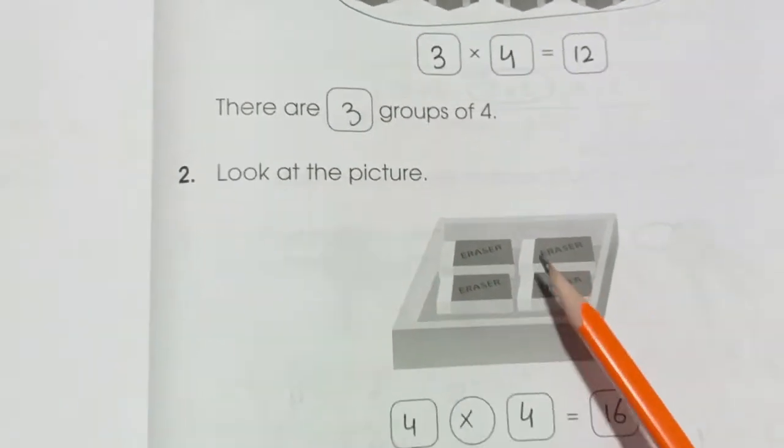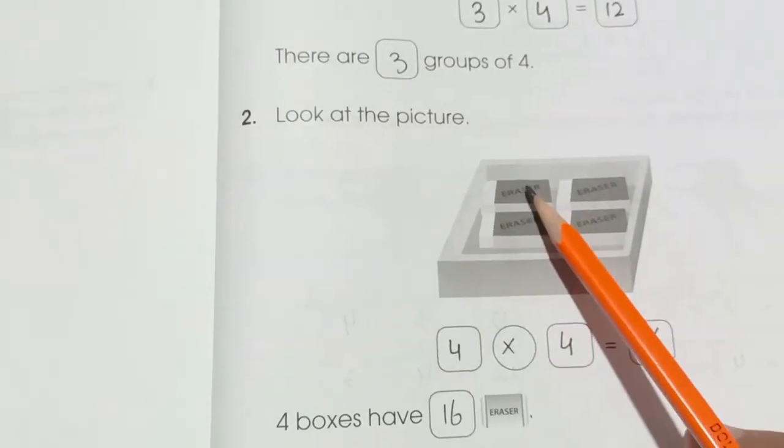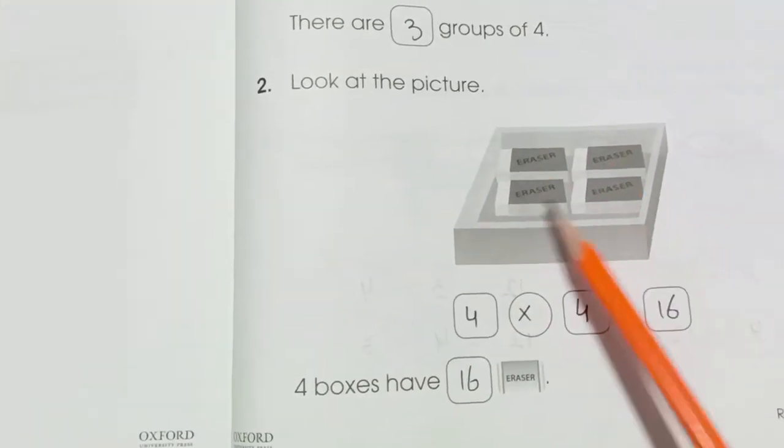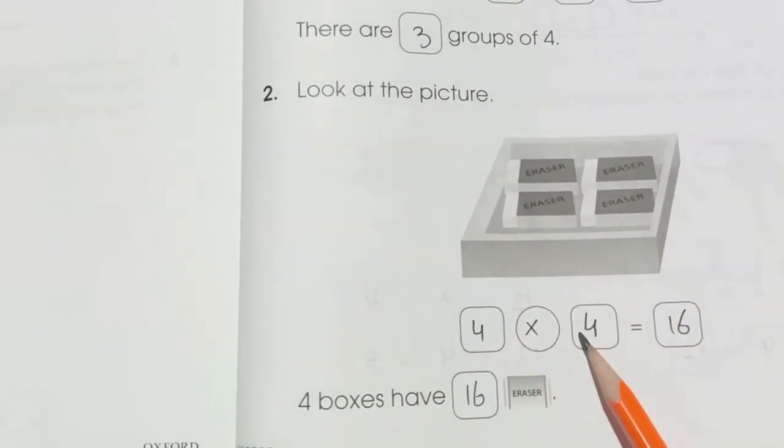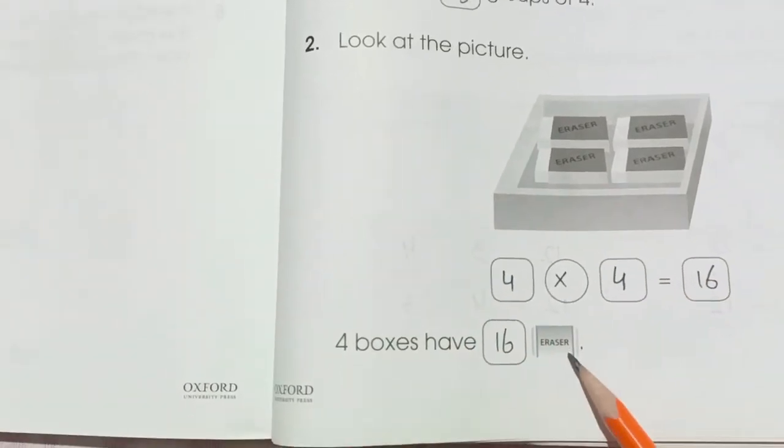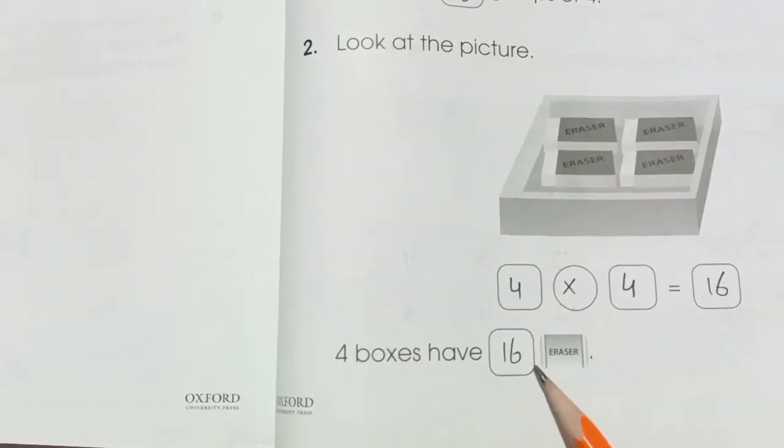Look at the picture. We have 1, 2, 3, 4. 4 erasers. So 4 multiplied by 4 is 16. 4 boxes have 16 erasers.